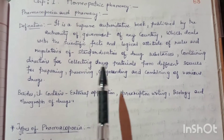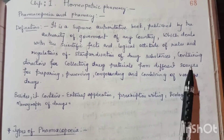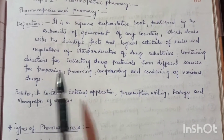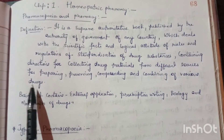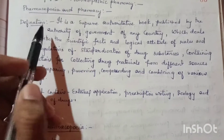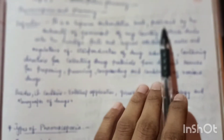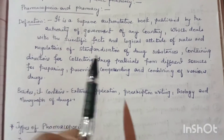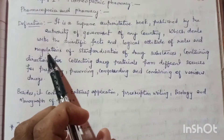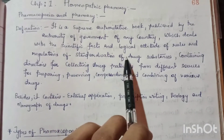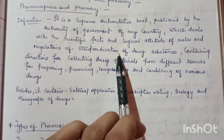Pharmacopoeia contains directions for collecting drug material from different sources and preparing, preserving, compounding and combining of various drugs. It also contains rules and regulations on how we will standardize each drug.